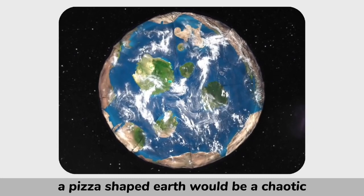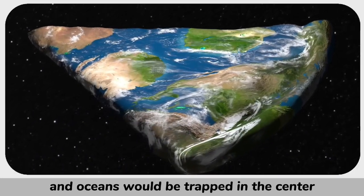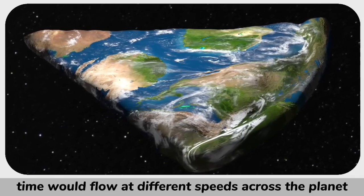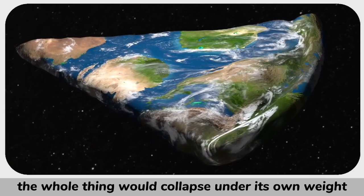In short, a pizza-shaped Earth would be a chaotic, unstable mess. The atmosphere and oceans would be trapped in the center, the edges would be lifeless, time would flow at different speeds across the planet, and eventually, the whole thing would collapse under its own weight.